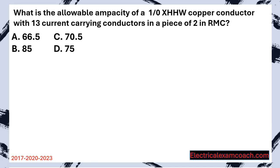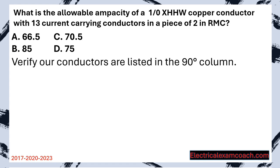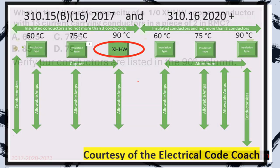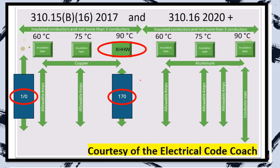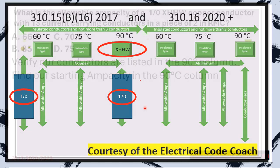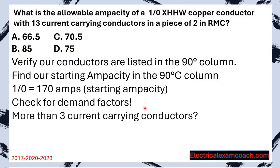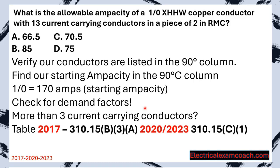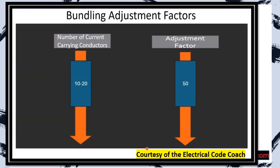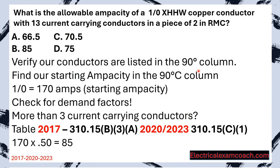Practice question: What is the allowable ampacity of a 1-0 XHHW copper conductor with 13 current carrying conductors in a piece of 2-inch RMC? Step one: verify XHHW is listed in the 90 degrees C column — it is. Step two: find the starting ampacity on the copper side of the primary ampacity table. Sliding down to 1-0 and crossing to the 90 degrees C column gives us 170 amps. Step three: there are more than three current carrying conductors, so we apply the adjustment factor. With 13 conductors we find the corresponding demand factor of 50%. 170 amps times 0.50 gives us a new reduced ampacity of 85 amps.